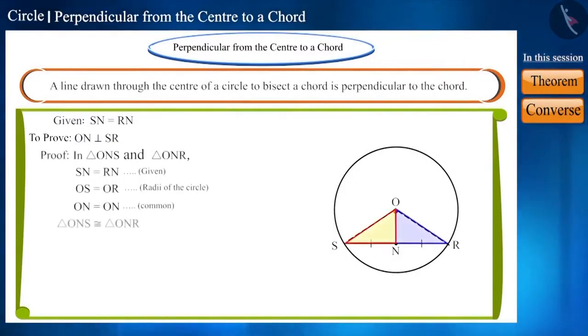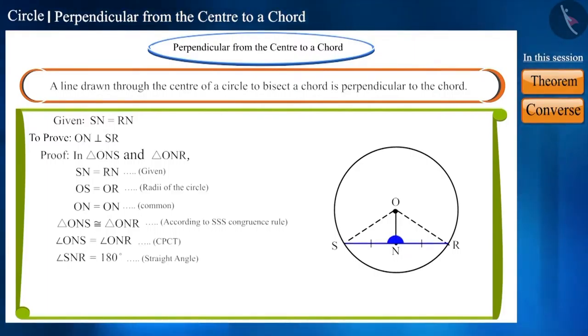Friends, you will find that these two triangles are congruent according to the side-side-side criteria or the SSS congruence rule. And we know that the corresponding parts of congruent triangles are equal. Therefore, angle ONS and angle ONR will be equal. We have to prove that angle ONR and angle ONS are right angles. Look at the figure carefully. Angle SNR is a straight angle. Therefore, it will be equal to 180 degrees.